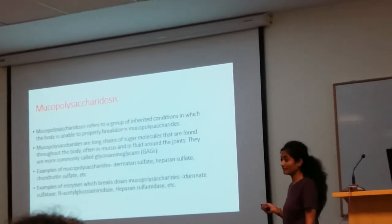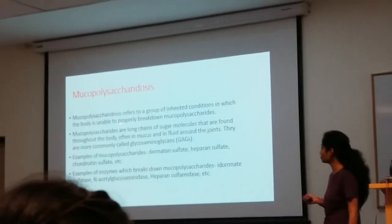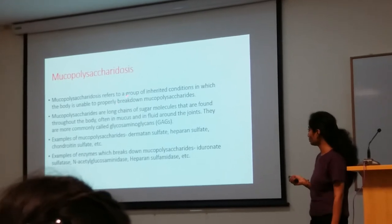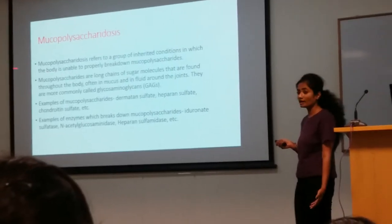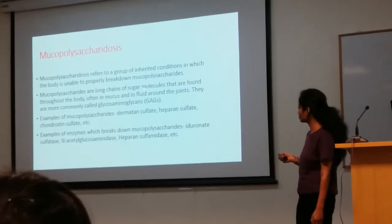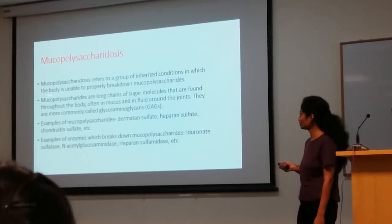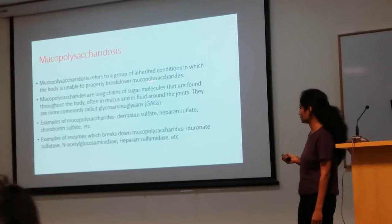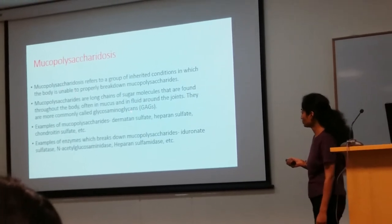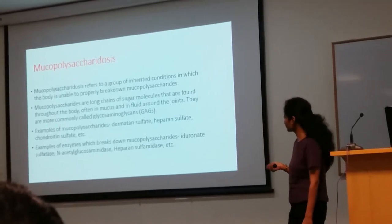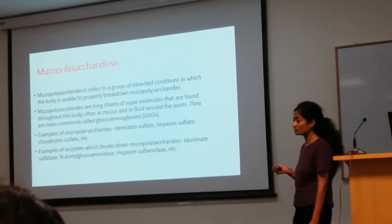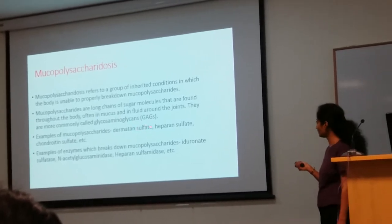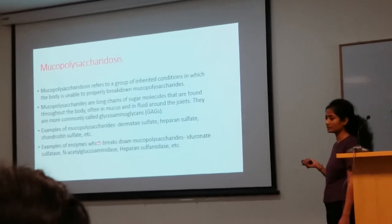Mucopolysaccharidosis refers to a group of inherited conditions in which the body is unable to properly break down mucopolysaccharides. Mucopolysaccharides are long chain sugar molecules found in the body, often in the mucus and around the joints. Examples include keratan sulfate, heparin sulfate, and chondroitin sulfate.